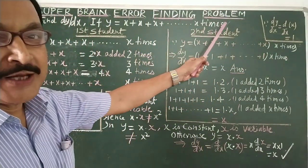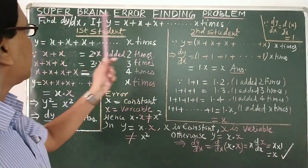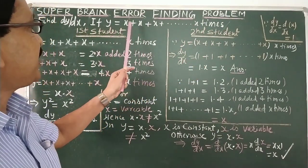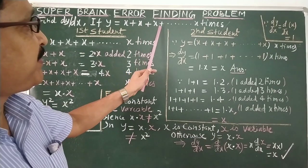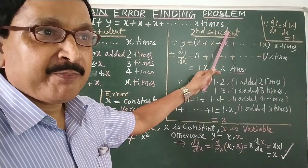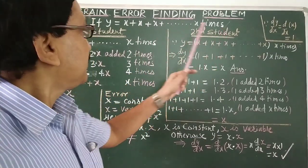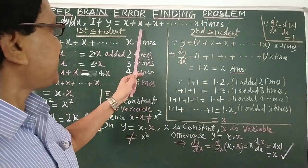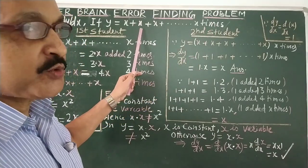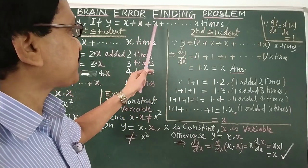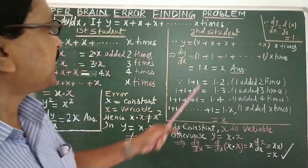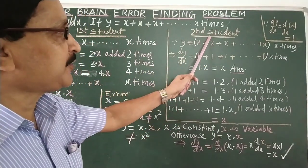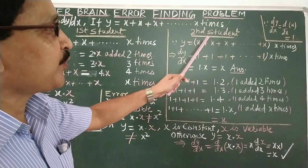Super brain error finding problem. The problem is: find dy/dx if y is equal to x plus x plus x, x times — that is, x added two times, three times, four times, up to x times. Two assistants, the topper and the second topper, have started doing the problem.